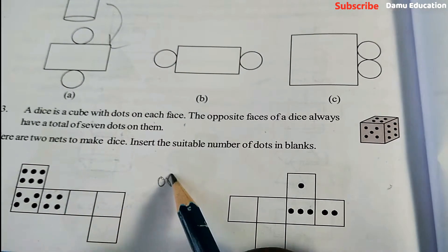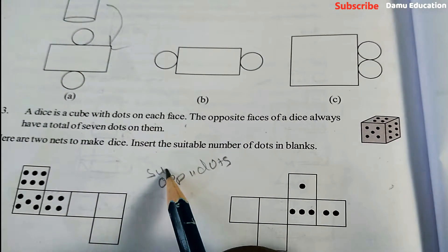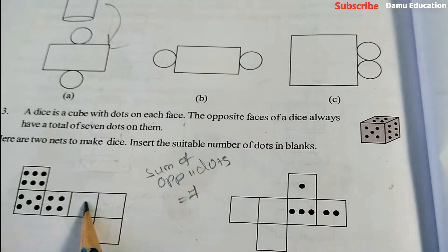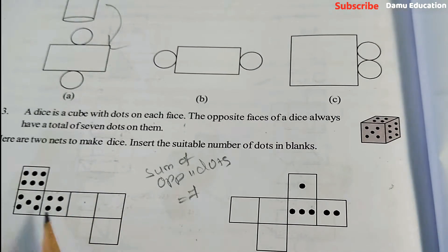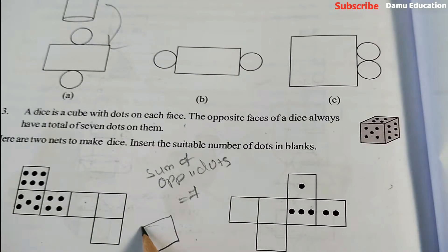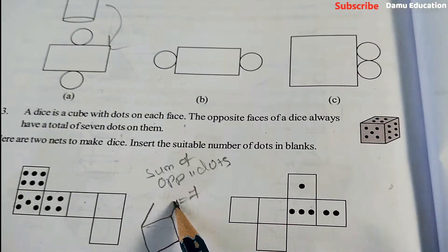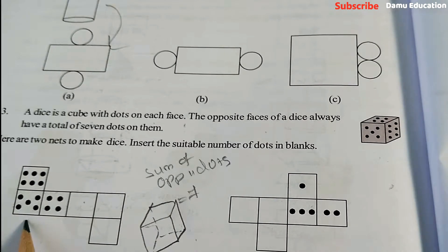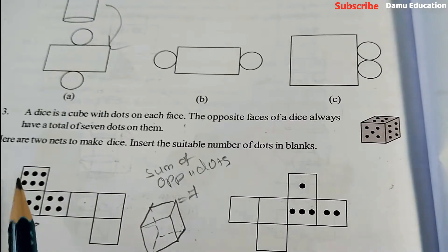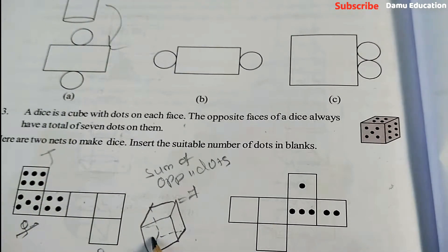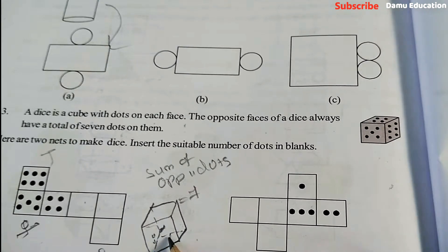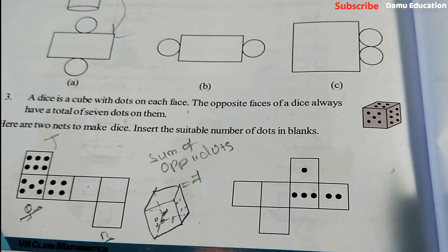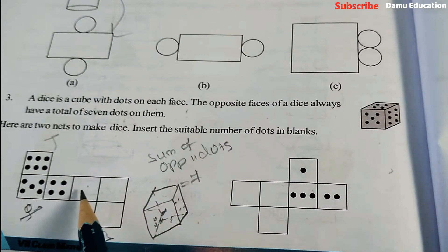If you add opposite dots, we should get a total of 7. Sum of opposite dots should be equal to 7. So if you fold this one, it will come like this. Let's start with the front face. Front, top, bottom. Front is how many? They are given 5. Back is, if you fold, it will be 4 like this. So back will be, for this back surface is this one, it is 2. Why? Because 5 plus 2 should be 7.